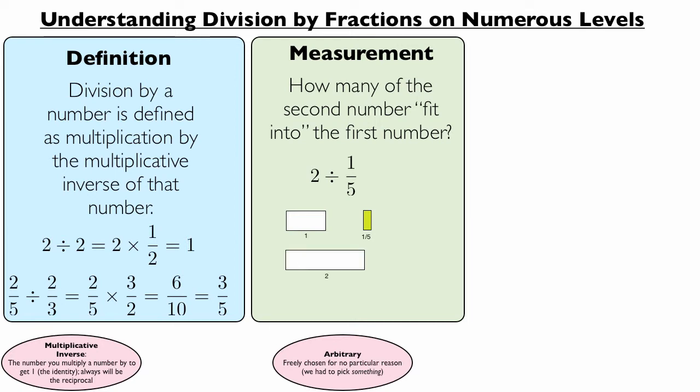and 2 is going to be that long rectangle over there that's twice as long as the first one. And the question is, how many of those green rectangles can fit inside the 2? And we see that 10 of them, if you count them, will fit inside. So that's why the answer is 10, according to the measurement model. It's asking how many fit into the first number.